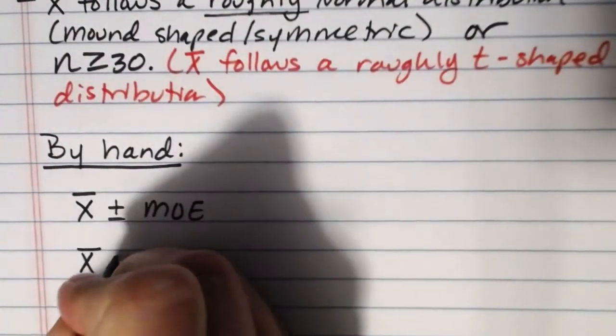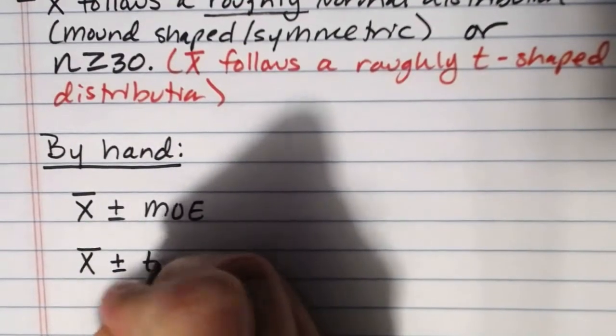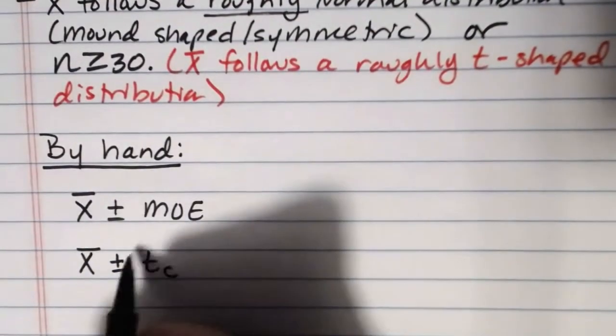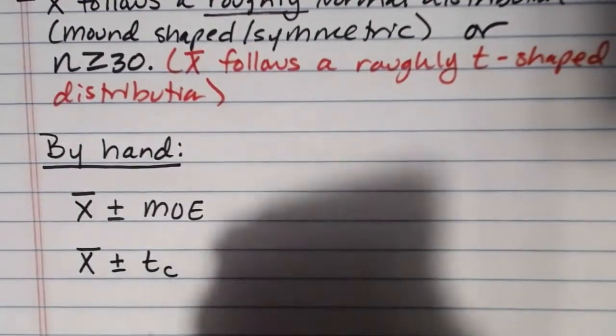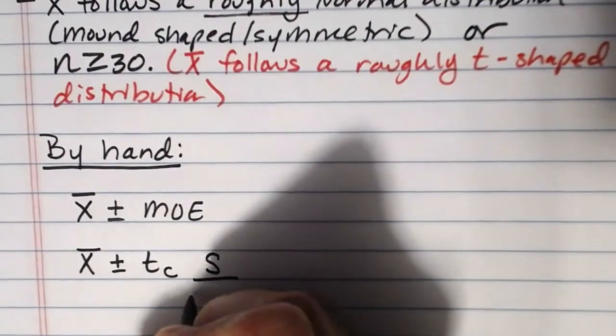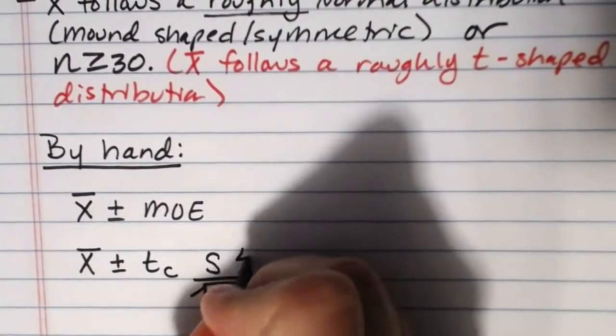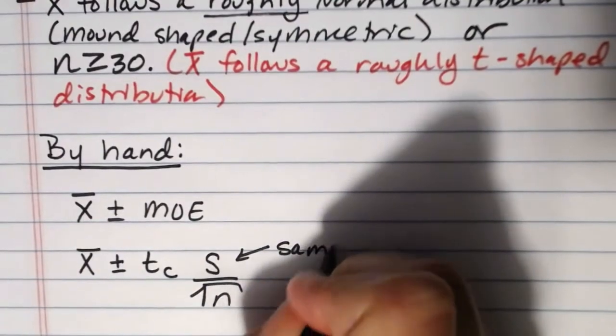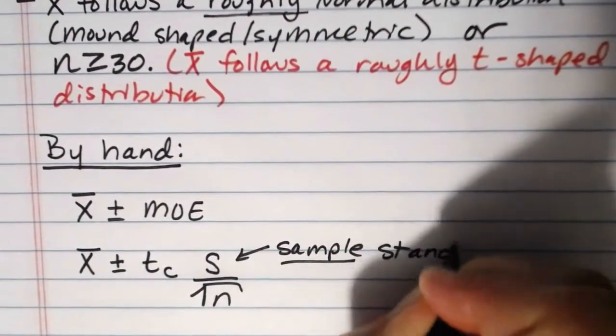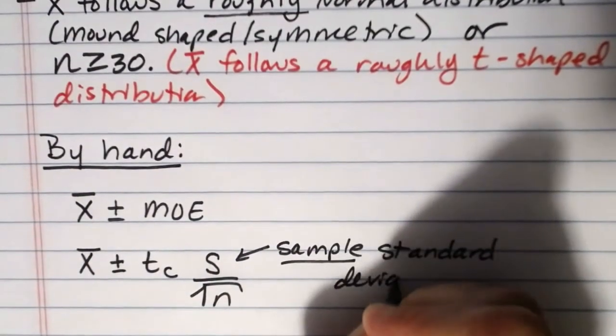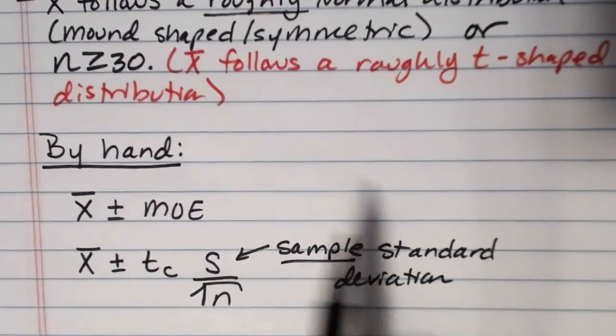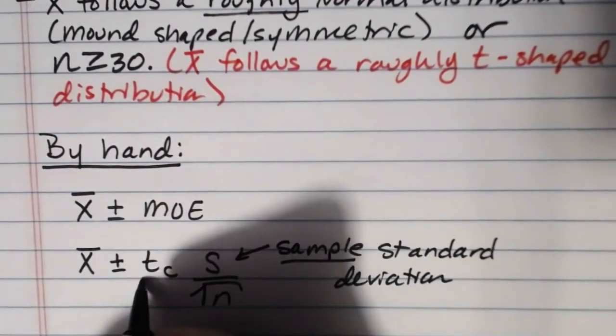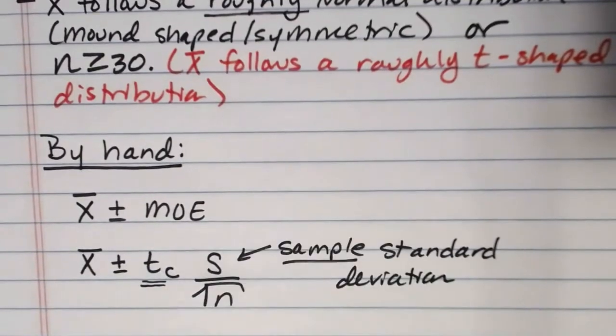So what it becomes here is x bar plus or minus t sub c the critical value of t rather than the critical value of z. And instead of sigma over root n it's s over the square root of n where s is the sample standard deviation. So in place of the population standard deviation which we don't know we're going to use the sample standard deviation instead and that also means that we're forced to use a student's t distribution rather than the normal to approximate the distribution of x bar here.